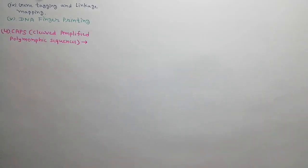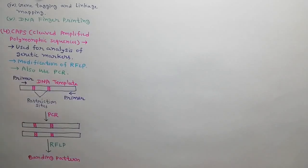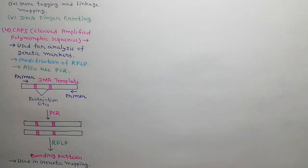Next DNA marker is CAPS, means Cleaved Amplified Polymorphic Sequences. This is used for analysis of genetic markers. This is a modification of RFLP. This technique also use PCR. Before the use of RFLP, the sample DNA is amplified by using PCR as shown in the diagram. This technique is used in genetic mapping.